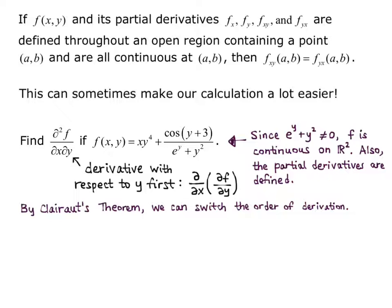So remember Clairaut's theorem says your function has to be defined and continuous, and the partial derivatives have to be defined and continuous at a particular point, and we're just saying that this function is defined and continuous at every point in R², and so are its partial derivatives. So we can just switch the order to ∂²f/∂y∂x.